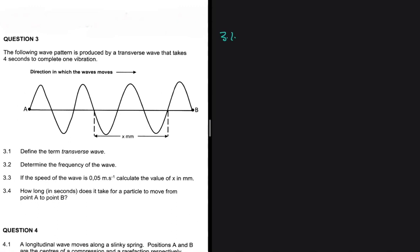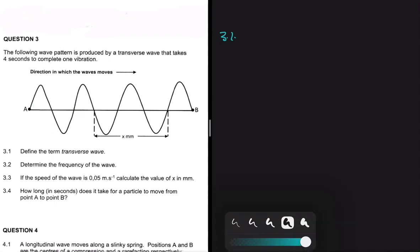Question 3.1 asks us to define the term transverse wave. A transverse wave is a wave where the particles of the medium vibrate at right angles to the direction of motion of the wave. As you can see here, the particles are going up and down while the transverse wave moves from A to B — they move at right angles to the direction of motion.